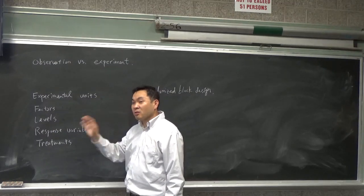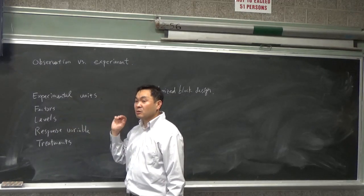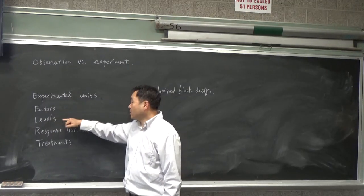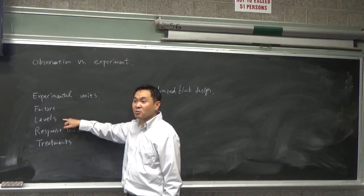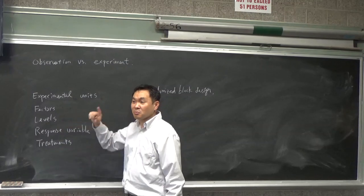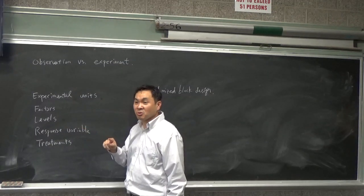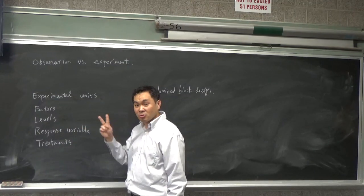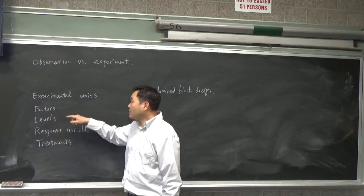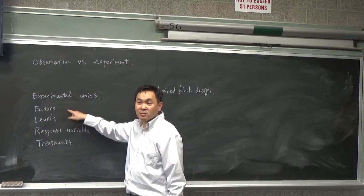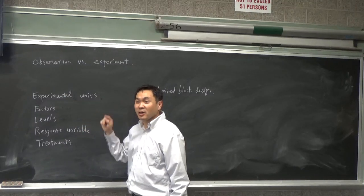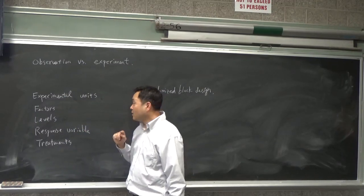So drug is one factor. The chemotherapy is one factor. And how many levels does the drug have in the one that I just described? It's placebo or the trial drug. So how many levels? Two. Two levels, right? And how about the chemo? It's also two because it's either you have it or you have not, okay?